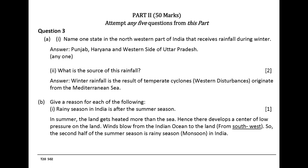Give a reason for each of the following. Rainy season in India is after the summer season. In summer, the land gets heated more than the sea. Hence there develops a center of low pressure on the land. Winds blow from the Indian Ocean to the land. So the second half of the summer season is rainy season in India.